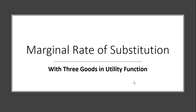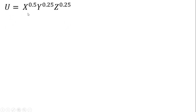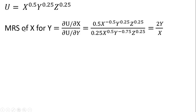Hello, in this video we're going to look at the concept of the marginal rate of substitution when we're dealing with a utility function with three goods. So here is our utility function — it's a function of three goods x, y, and z. And we're going to solve for a number of different marginal rates of substitution.